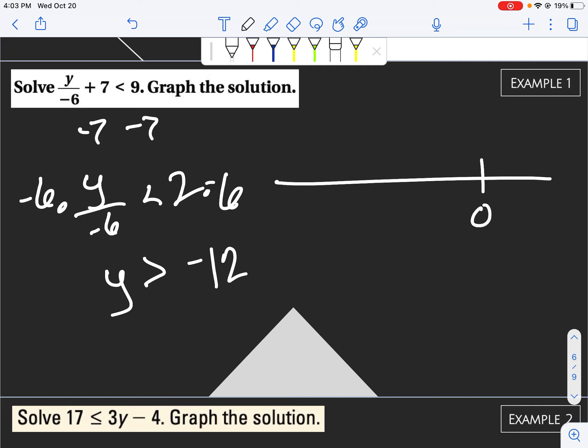We've gotten pretty good at graphing these. Open dot. And y is greater than negative 12. So our arrow would be going that way.